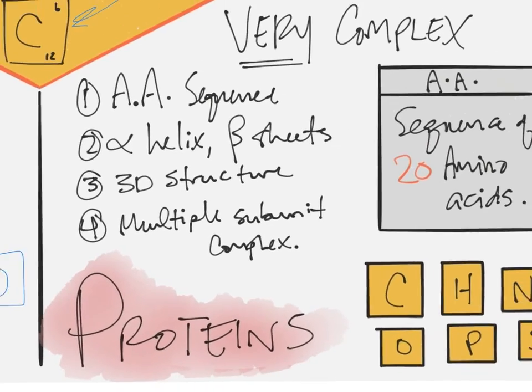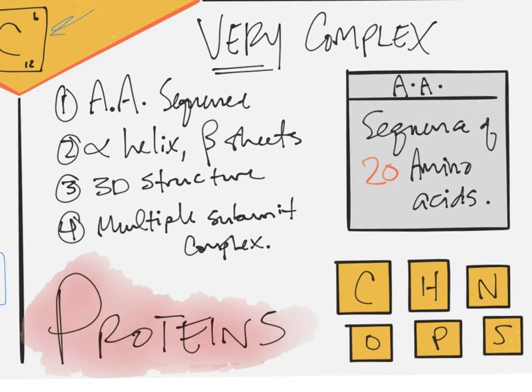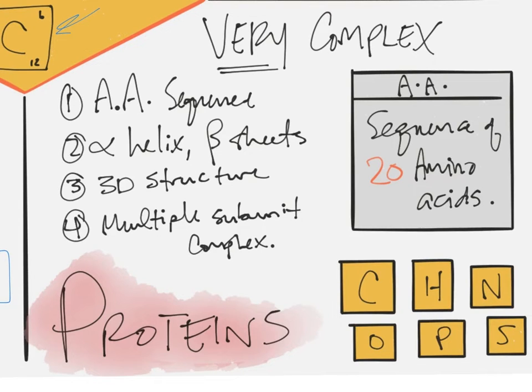So over here, the last class, we've got proteins. These are the most complex molecules just because of their size and shape. So proteins, because they're complex, they have a lot of atoms involved. So carbon, hydrogen, nitrogen, oxygen, phosphorus, sulfur, all of these can be involved, and that's delineating for us.